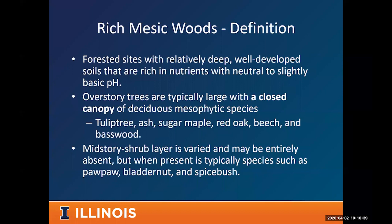If there's a shrub layer in these rich mesic woods, you'll often find pawpaw, bladdernut, and spicebush. For me, the highest wildflower diversity in southern Illinois occurs at sites with a lot of bladdernut. If I see a lot of bladdernut on the landscape, that's a good indicator of a high-quality, nutrient-rich site likely to have many spring wildflowers.